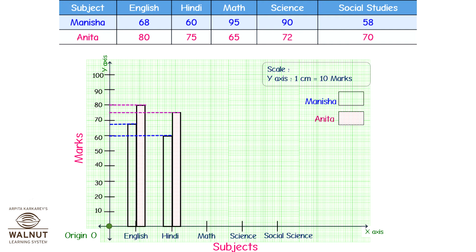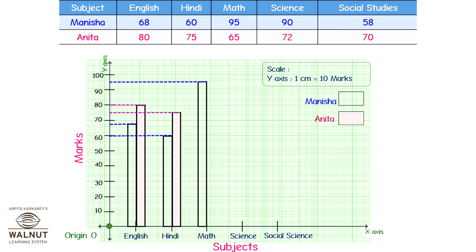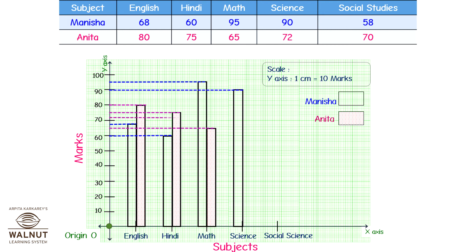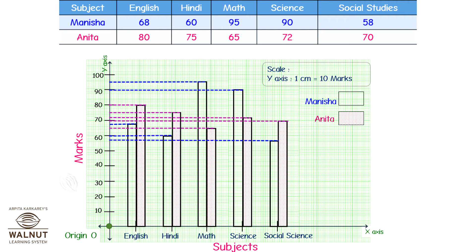You can plot the bars for all other subjects now. Remember, whatever width you decide for the very first bar is the width that will remain for all the bars. The height will keep changing according to your data. Draw the bars and you are ready to compare.